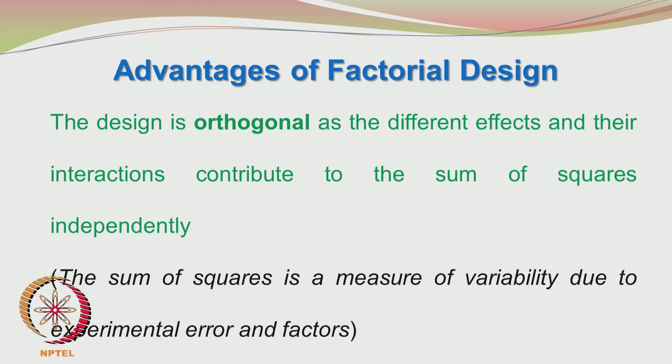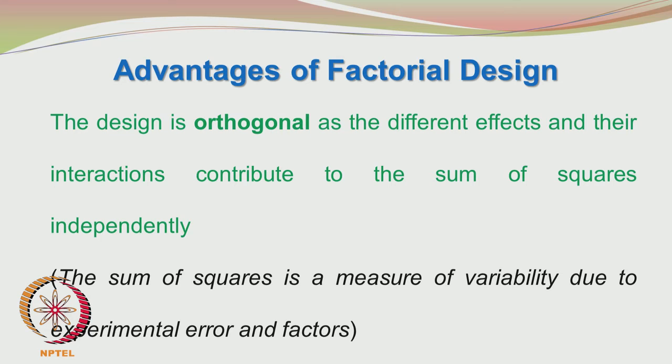Another elegant advantage of the factorial design is its orthogonal property or characteristics. What is orthogonality and how does it make the design elegant and simple we will soon see. First, the objective is to give an introduction to factorial design, then we will look at orthogonal design experiments. The basic idea in orthogonal designs is that the different effects are designed such that their contribution of sum of squares to the overall sum of squares become independent of each other.